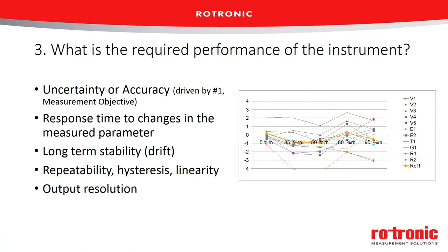Performance is typically the topic everyone goes straight to. What is the accuracy or uncertainty of the instrument? This is really driven by our measurement objective — the objective should help us understand how accurate an instrument we need, and that will narrow down potential instruments quickly. If you need good accuracy, you'll eliminate a lot of low-cost instruments very quickly, but you'll need to find a good balance.